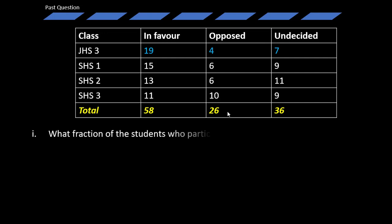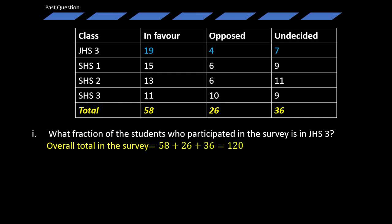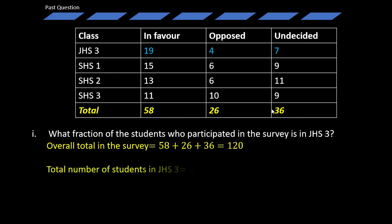The question was: what fraction of the students who participated in the survey is in GHS3? The overall total in the survey would be 58 plus 26 plus 36, which gives you 120. The total number of students in GHS3 would be 19 plus 4 plus 7, which gives you 30.